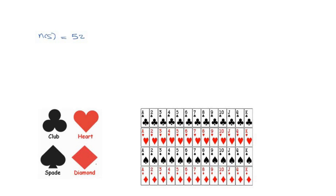This pack of cards is made up of four types of cards, which are clubs, hearts, spades, and diamonds, as you can see — they are represented with different symbols. So we are going to be looking for the number of clubs, the number of hearts, the number of spades, and the number of diamonds.